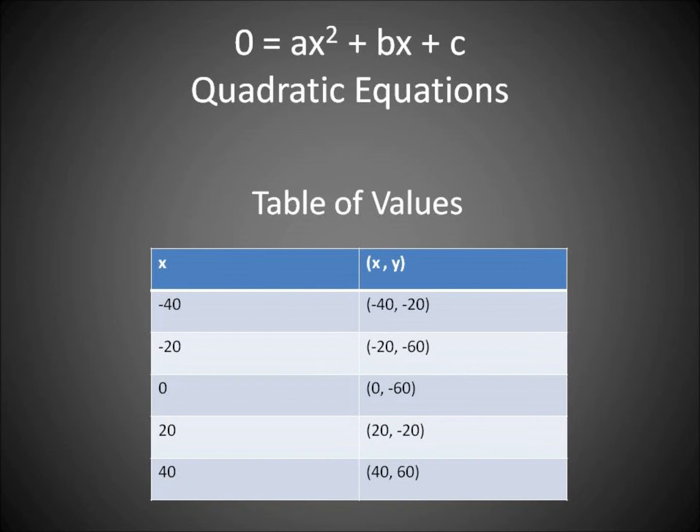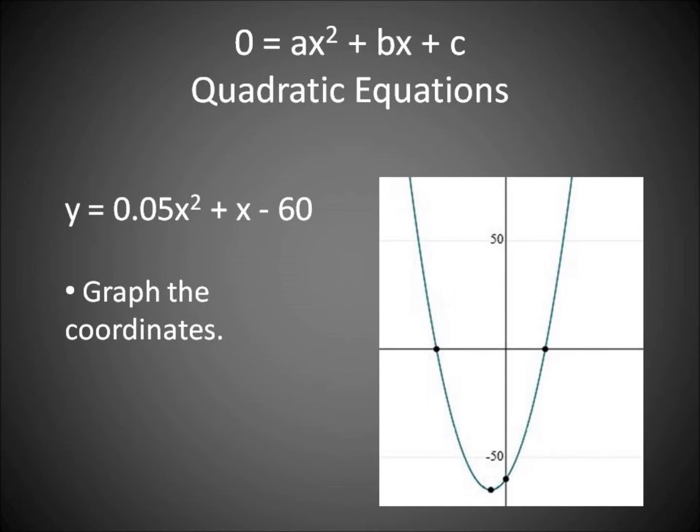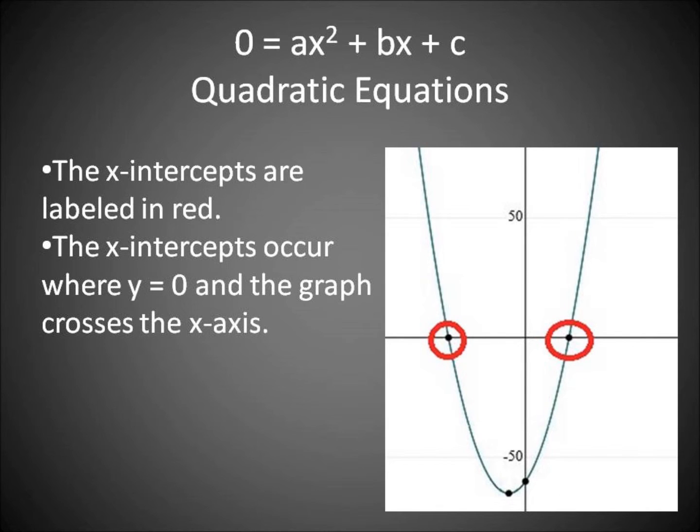When we graph our coordinates correctly, we have a nicely shaped parabola which opens upward. Our x-intercepts are the answer, and here we show our y-intercept. These are the x-intercepts in red, and they have our positive and negative values.